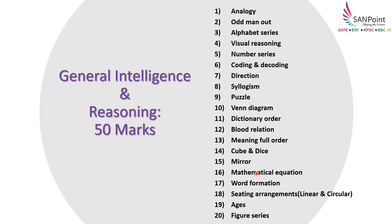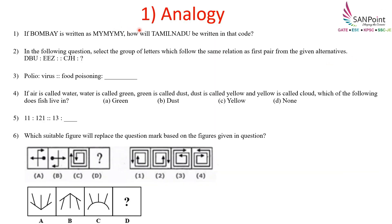The main purpose of listing all these topics is that you have to cover all of them at any cost in this subject. Along with that, go through previous year SSC JE question papers — from that you will know what other topics to cover. Now let's understand the kind of questions you can expect in Analogy. For example: if Bombay is written in a certain code, then how can Tamil Nadu be written in that code?